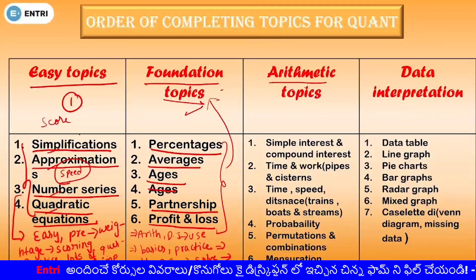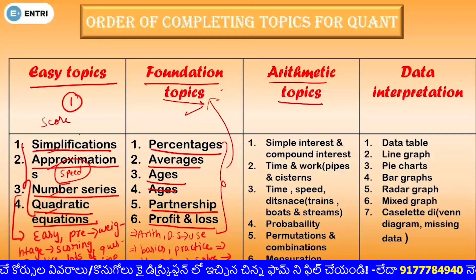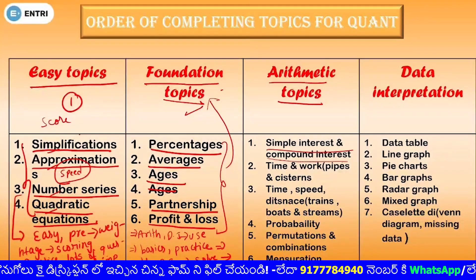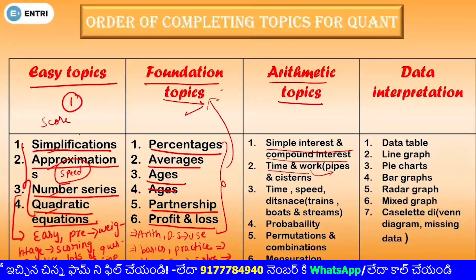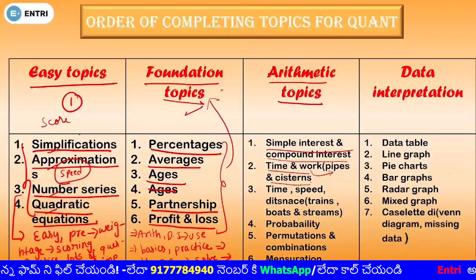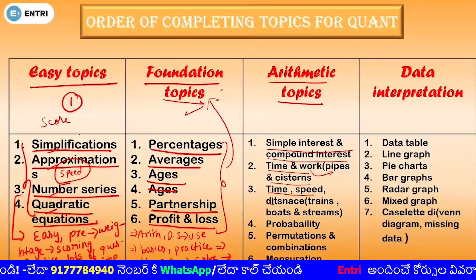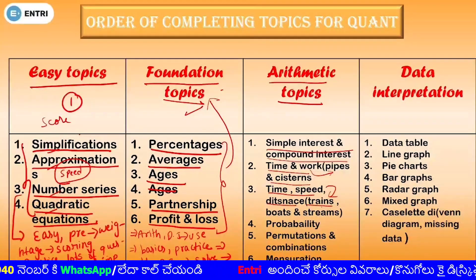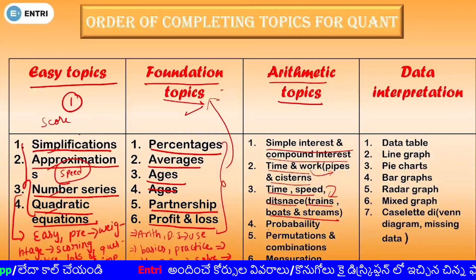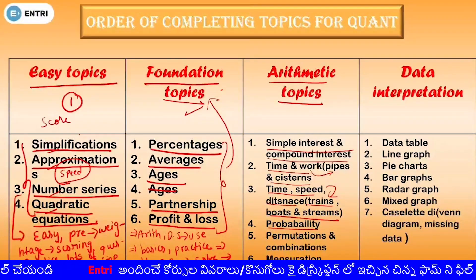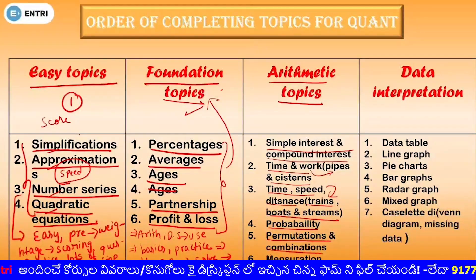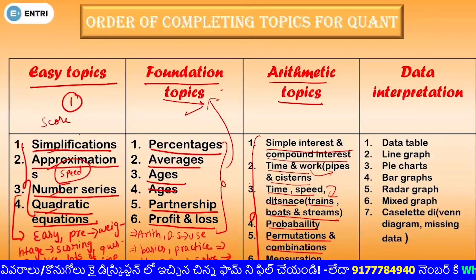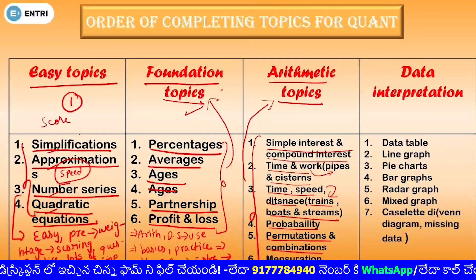Once you complete foundation topics, concentrate on arithmetic topics. Under arithmetic topics, we have simple interest, compound interest, time and work. Under time and work, we have pipes and cisterns questions. Next, time, speed, distance, and trains related. We have boats and streams related questions. Next, we have probability and permutations and combinations. And then, mensuration. So these six topics also belong to arithmetic topics.